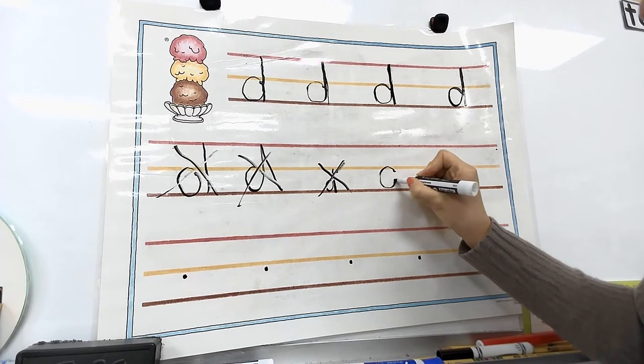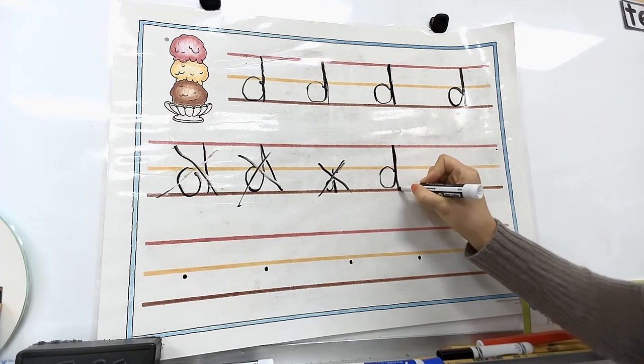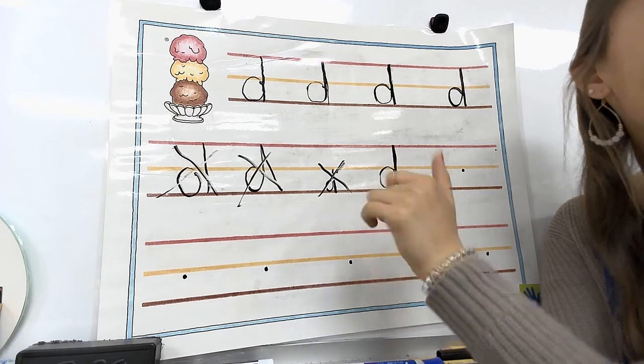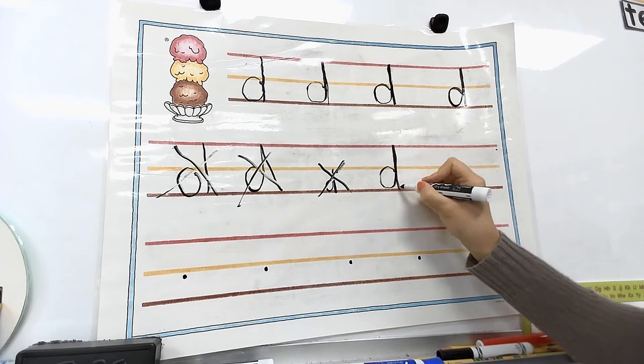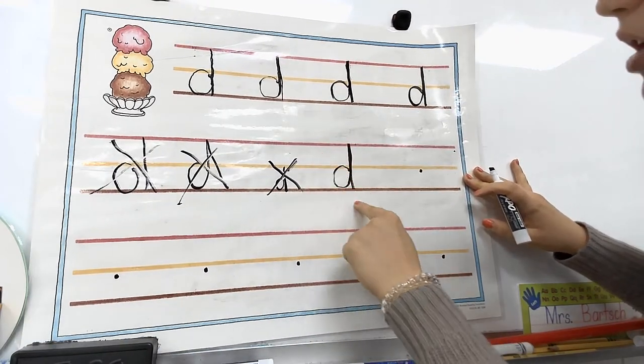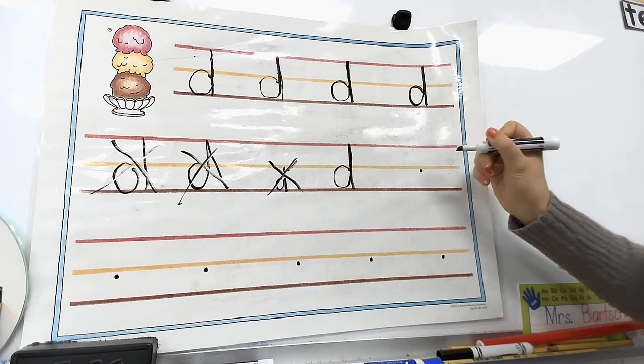Okay. How about this one? Tell me how I do on this one. That's good, right? Yeah, that's good. It went straight up, straight down. There's no space, not too much space. I used all the ice cream lines. How about this one?